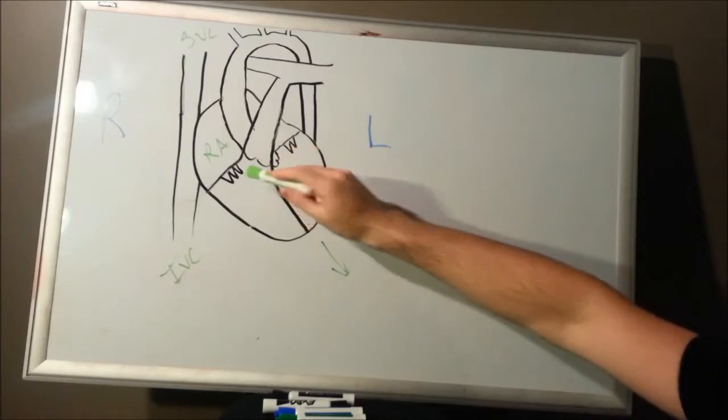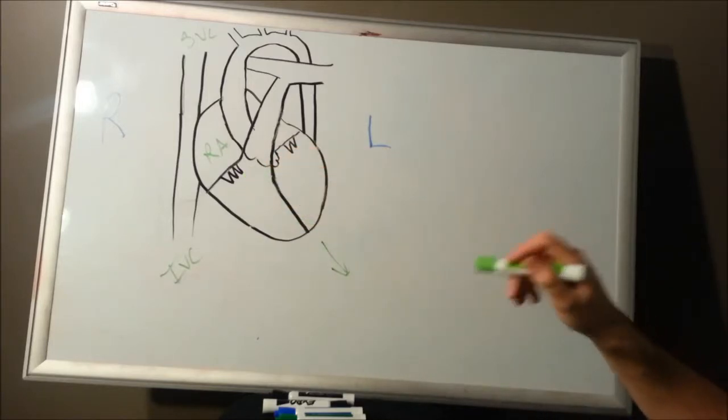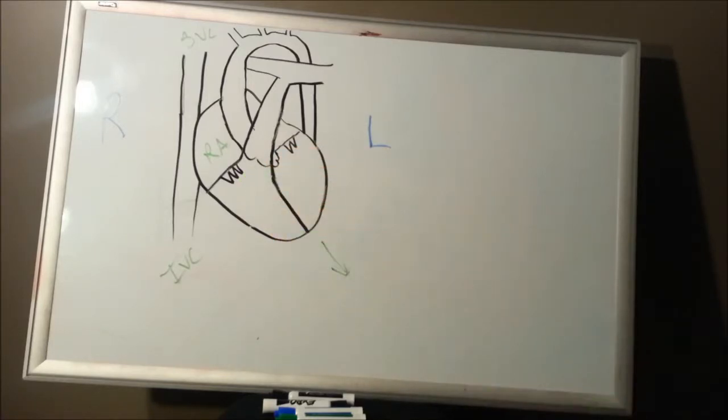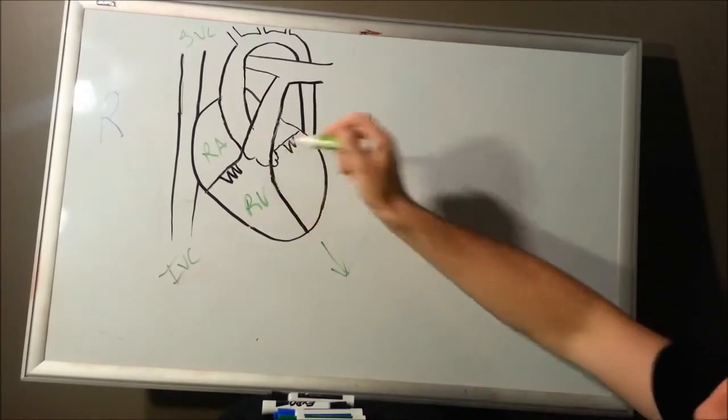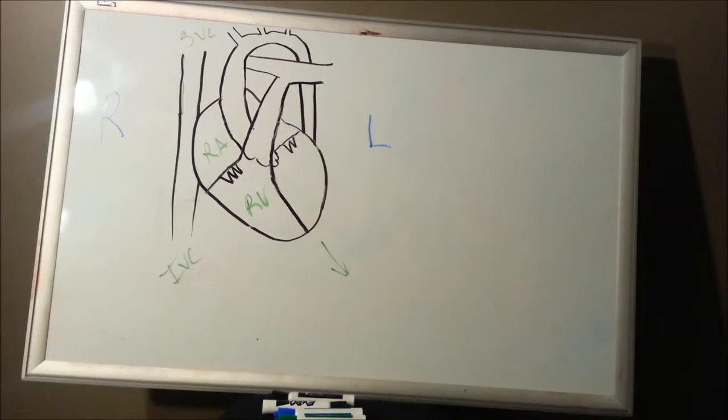From there, it's going to go through this valve, which has three leaflets, which I drew in. It's going to be called the tricuspid valve. Tri for three. From there, it's going to go into the right ventricle. And the ventricle is going to be kind of the muscle of your heart. It's going to pump things.